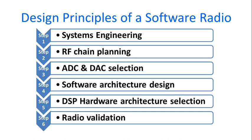We will now see the steps involved in designing a software radio. The first step is systems engineering. The next step is RF chain planning. The third step is analog-to-digital conversion and digital-to-analog conversion selection. The fourth step is software architecture design. The fifth step is digital signal processing hardware architecture selection. The final step is radio validation.